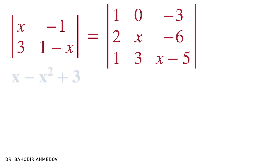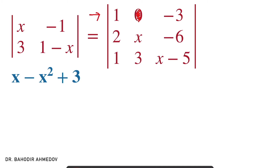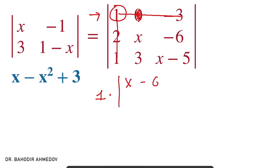The determinant of the right-hand side part is going to be slightly more difficult. We just need to go through one of the rows. I see a 0 here on the first row, so we'll go through the first row. The idea of finding the determinant using cofactors is that we go through the entries of one row. We choose the entry, eliminate the row and column where it is located, and multiply this element — 1 in this case — to the determinant of the remaining matrix, which is x minus 6, 3, x minus 5.